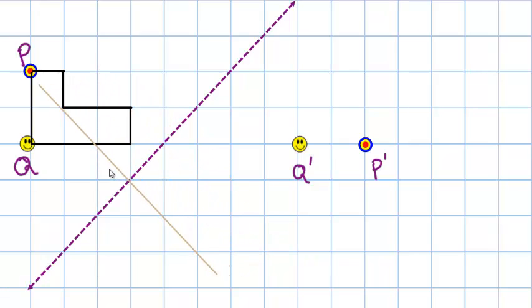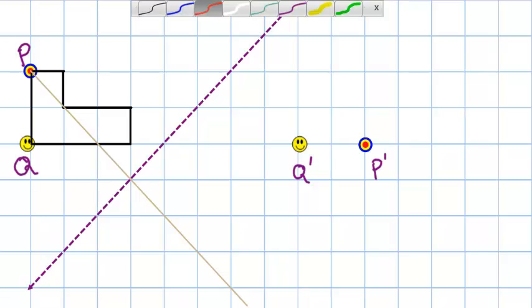And so P is going to have to reflect across the axis of reflection. And it has to be the same distance away from the axis of reflection that P is. So P is 3 diagonal spaces away from that axis. So the intermediate step, P star, is going to land right there.